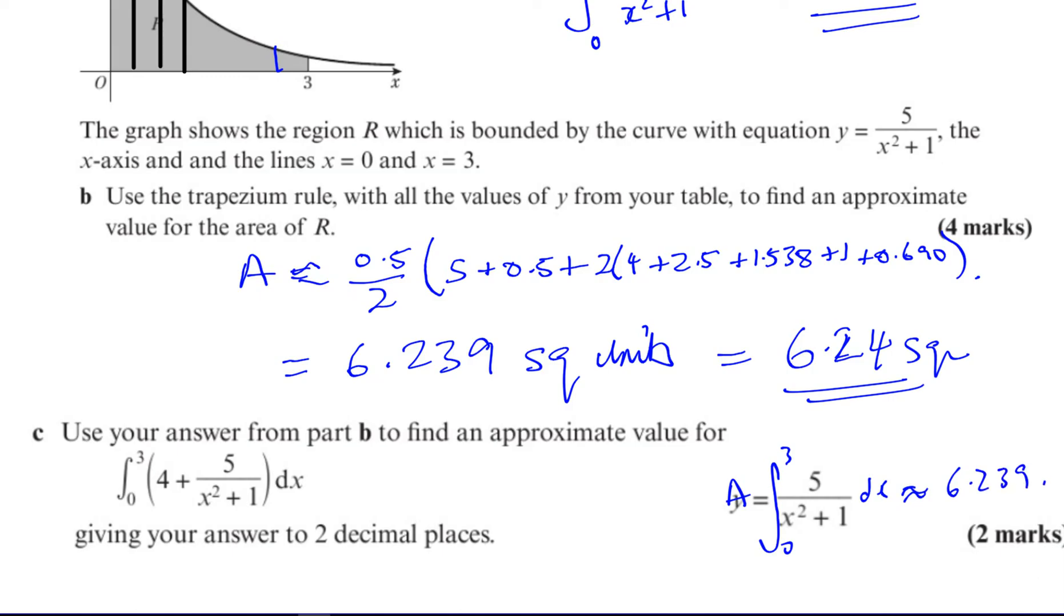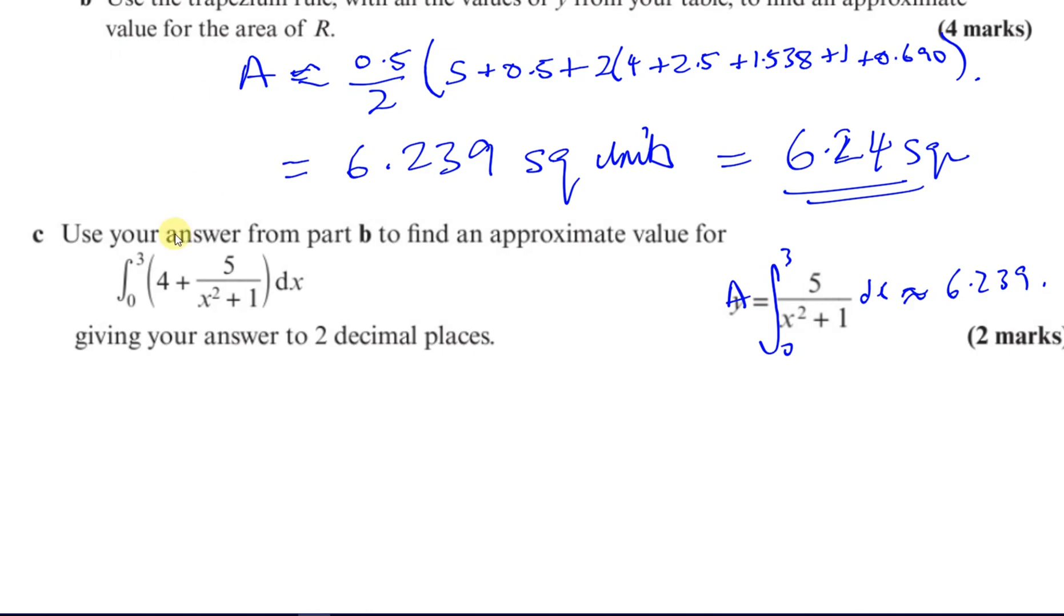Okay, now what we're asked to find is something which is, that looks similar. And what you can do when you have an integral like this, you can split them up into parts. So I can say this is the same as the integral of between 0 and 3 of 4 with respect to x, plus the integral of, between 0 and 3, of 5 over x squared, plus 1 with respect to x. Now, I don't know how to integrate this, but I know its approximate value, which is 6.239. That's using the answer from part B, you see. But I do know how to integrate this.